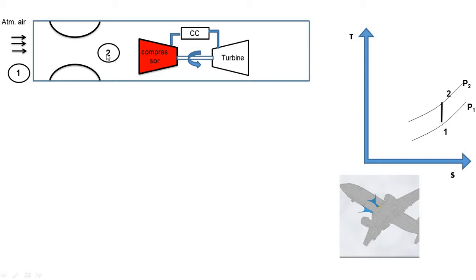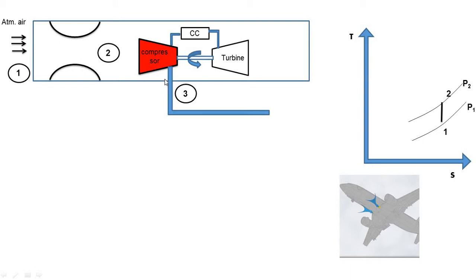After the diffuser, the ramming air is supplied into the main compressor. In this compressor, the process 2 to 3 takes place — it is isentropic compression. Pressure is increased, temperature is increased, and entropy remains constant. If you want to know how to draw the symbols of compressor and turbine, the link is provided on the top right of your screen and in the description.